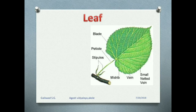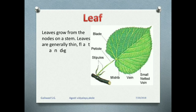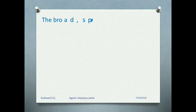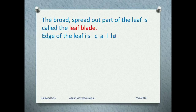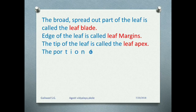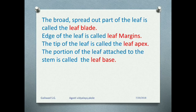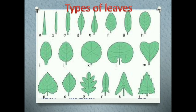The leaves grow above the stem. Leaves grow from the nodes on the stem. Leaves are generally thin, flat, and green in colour. The broad spread-out part of the leaf is called the leaf blade. The edge of the leaf is called leaf margin. The tip of the leaf is called the leaf apex. The portion of the leaf attached to the stem is called the leaf base. Look at the picture — there are various types of leaves present.